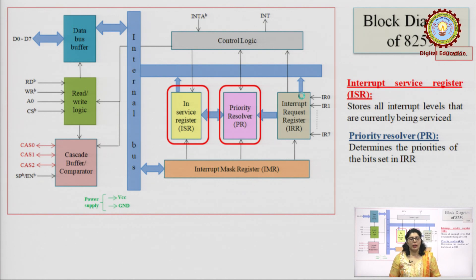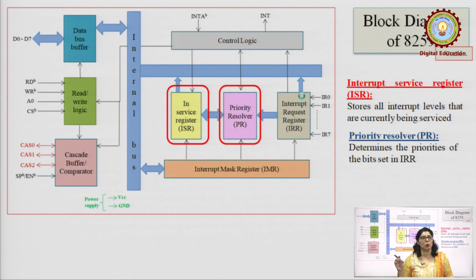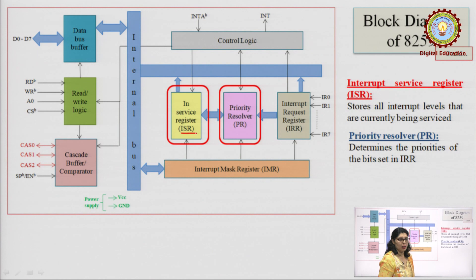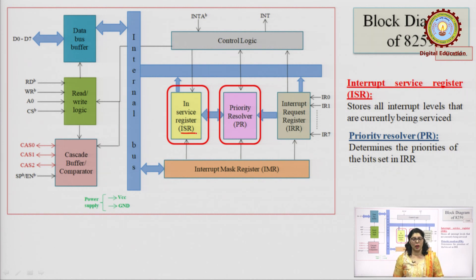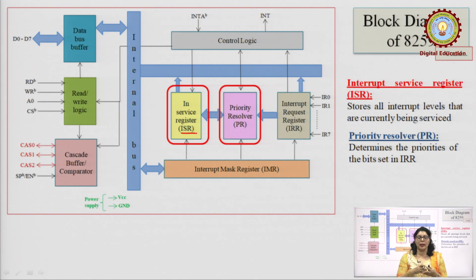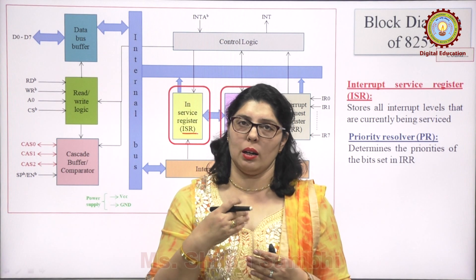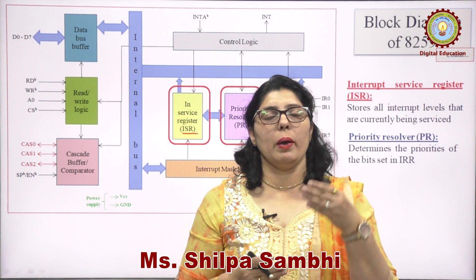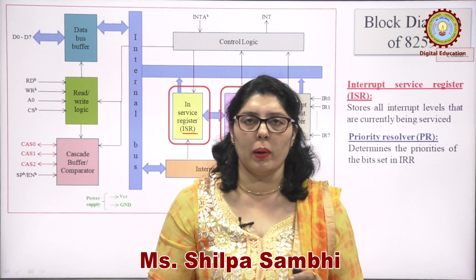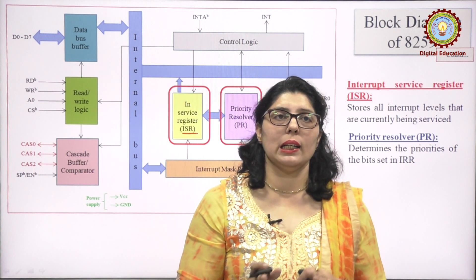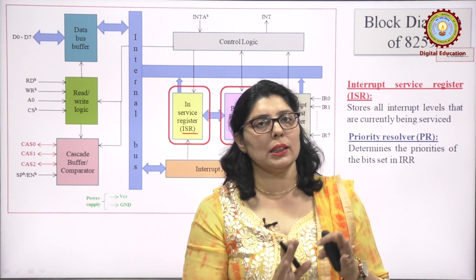Next is the In-Service Register, also called ISR. This stores the status of all interrupts that are currently being serviced: what level each is at, whether an interrupt routine is about to complete, whether it has just been initiated, and if there is any problem. All this status information is kept in the in-service register.